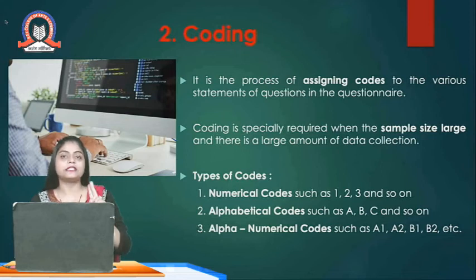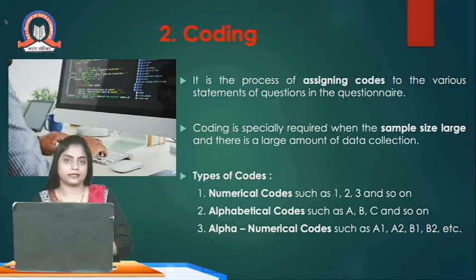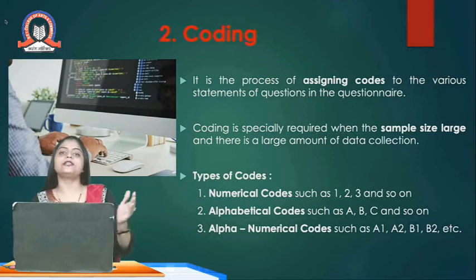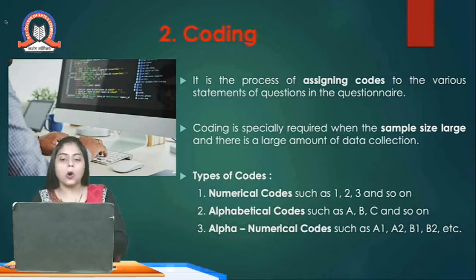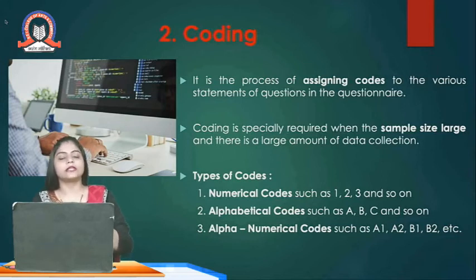The second step in data processing is coding. Once we have collected the data, for analysis purposes we need to convert the entire data into codes. Especially when the data is large in numbers, we require to convert it into codes. The codes may be in the form of numbers like 1, 2, 3 and so on; alphabets like A, B, C, D and so on; or alphanumerics like A1, A2, B1, B2, etc.